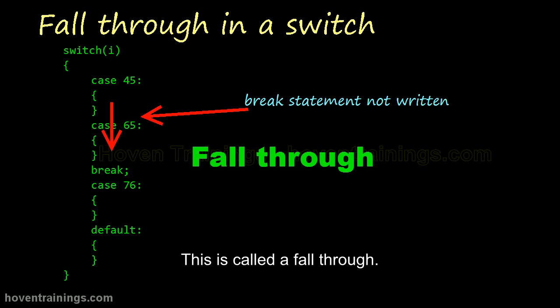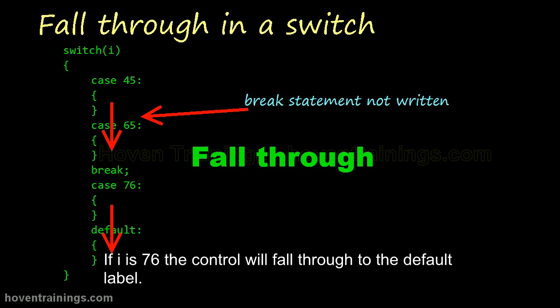This is called a fall-through. This is another fall-through. If I is 76, the control will fall through to the default label.